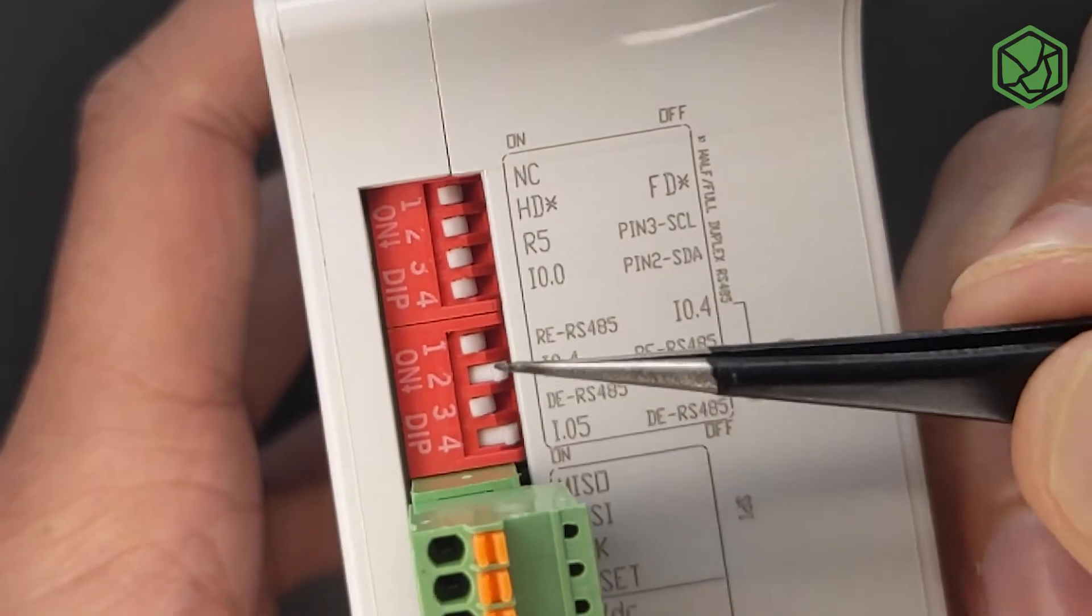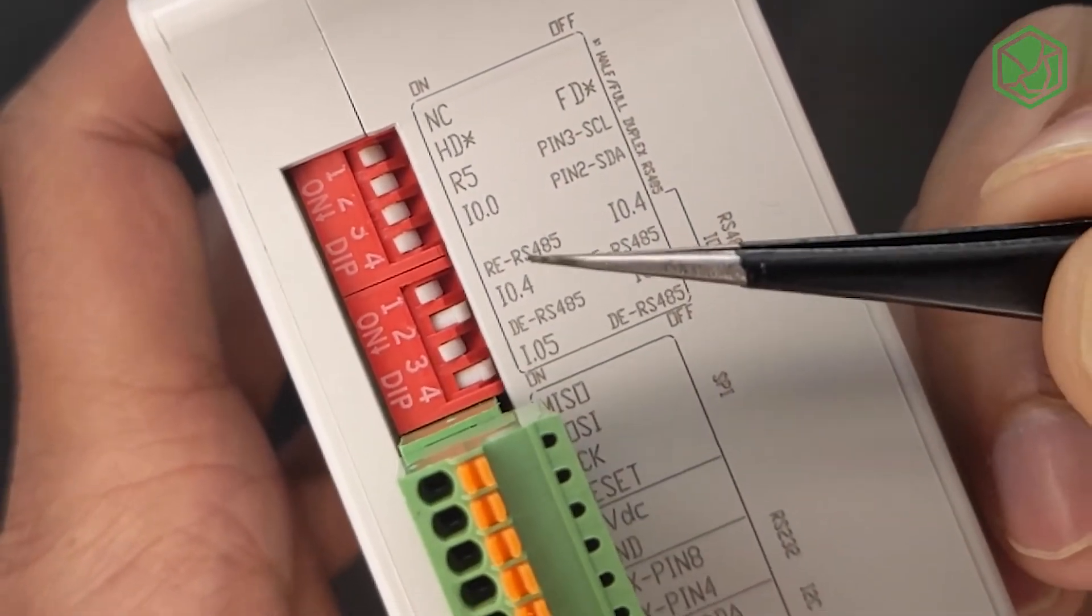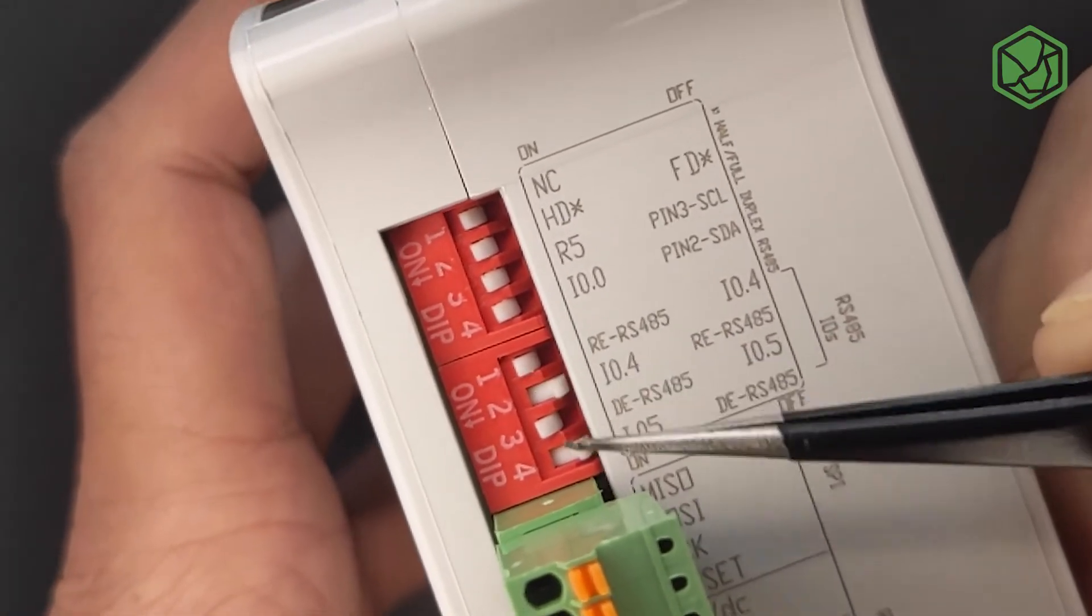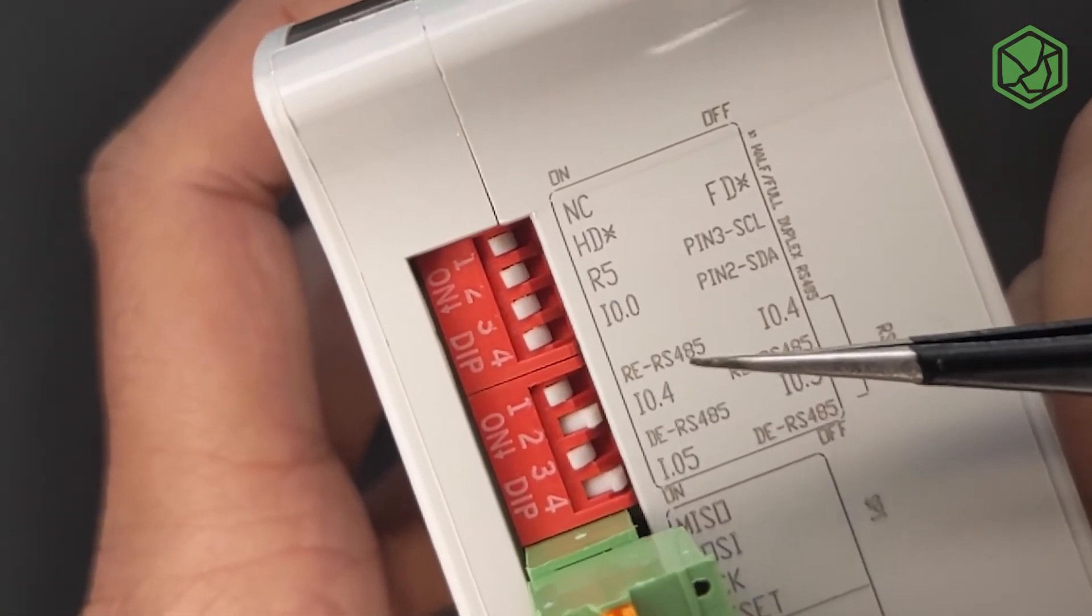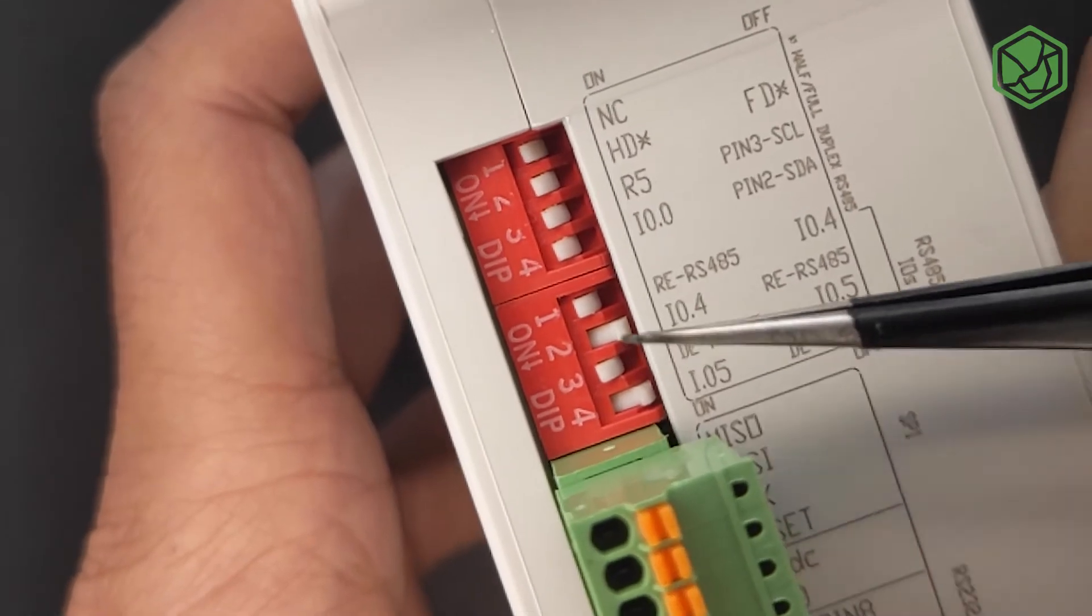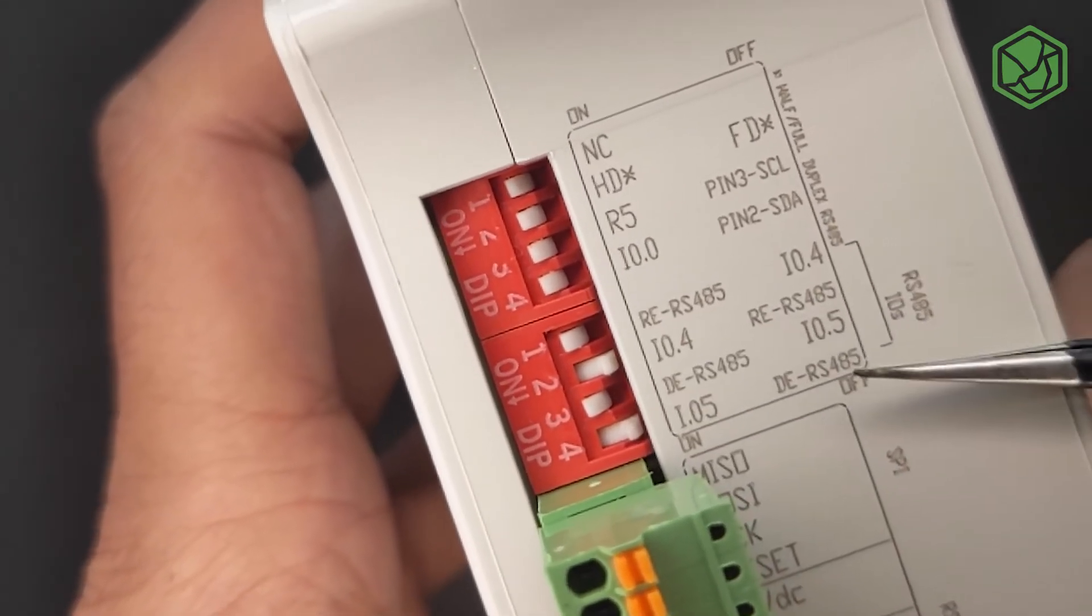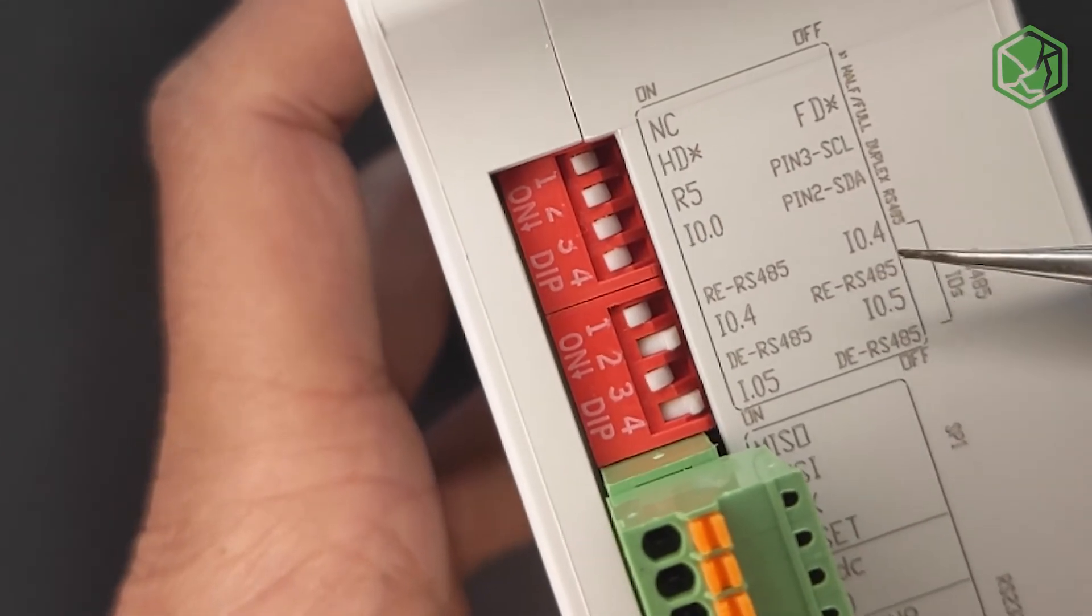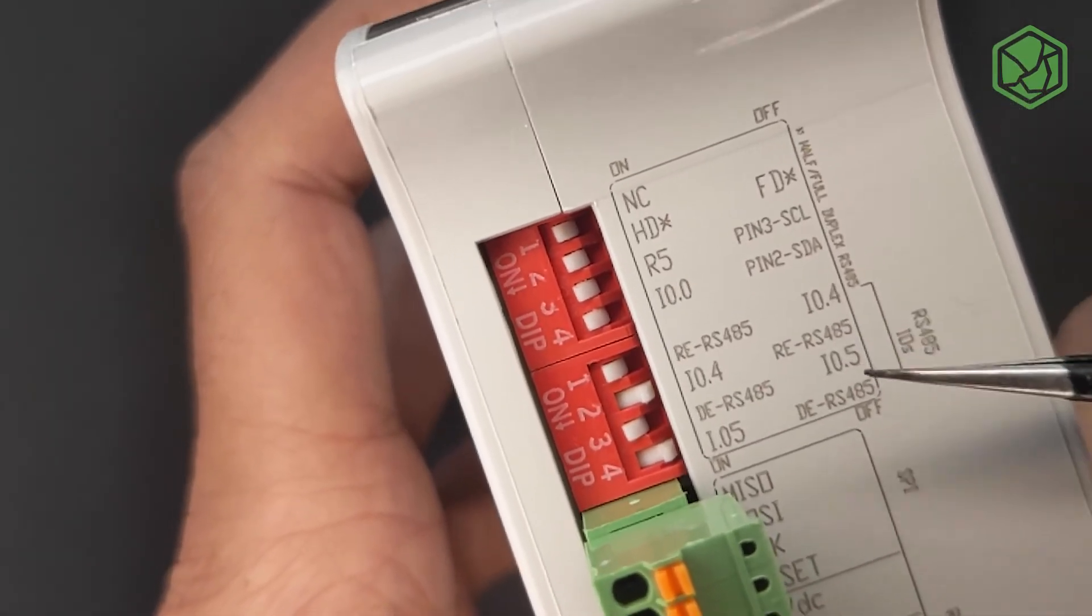Moving on to the second block, you have pin number one and three for reset enable and data enable of RS-485. They need to be turned on if you've chosen RS-485 communication. And pin number two and four needs to be turned off for RS-485. If they're the opposite, then you have input 0.4 and 0.5 enabled.